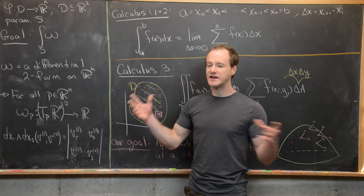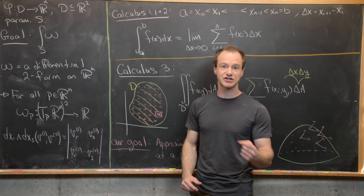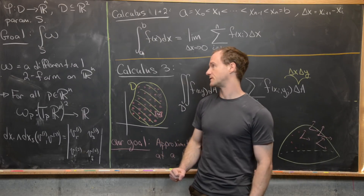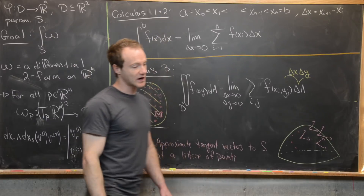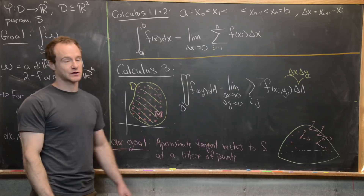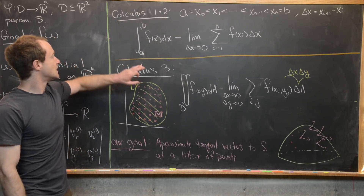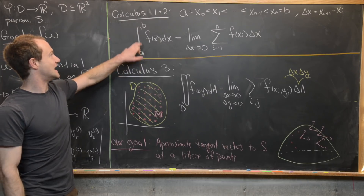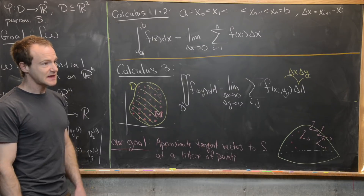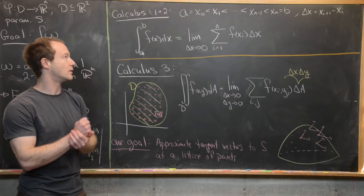We generally did this for differential m-forms in the last video, but since we're looking at integration this time and it's a little more complicated, we'll focus just on two-forms for now. We're going to take inspiration from integration as defined in previous courses. In Calculus 1 and 2, we defined a definite integral over an interval [a, b] by first partitioning this interval into n equal pieces.